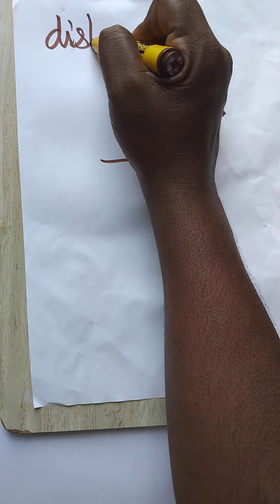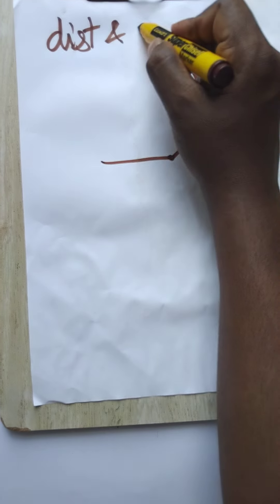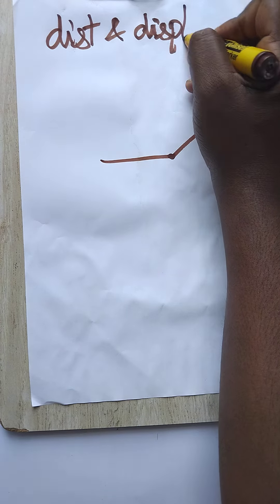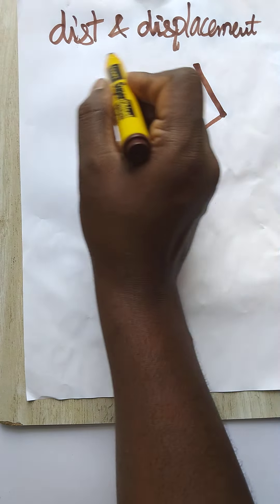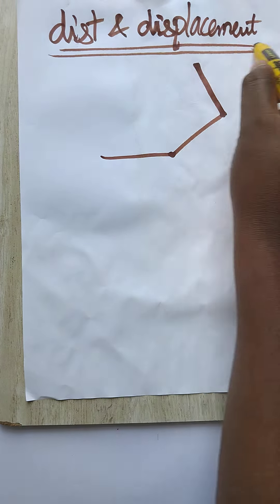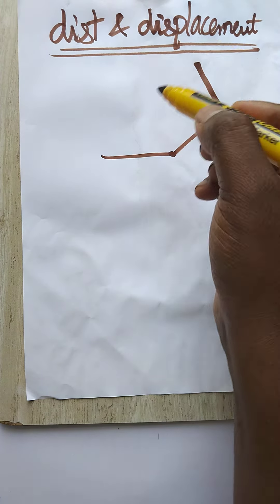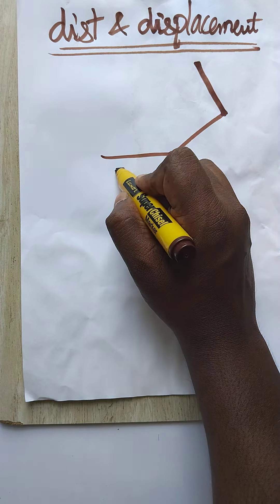Today we are going to learn what is distance and displacement for the given shape. Distance is the actual length of the path. Displacement is the shortest distance between starting and ending point.